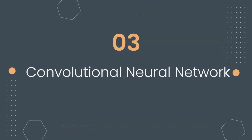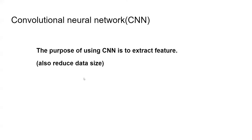After that we come to convolutional neural networks, or CNN. Although the name includes 'neural network,' the convolutional layers don't actually have the idea of neurons — it's just a series of math calculations. The purpose of using a CNN is to extract features from the data, and it also reduces data size — though feature extraction is the primary goal.